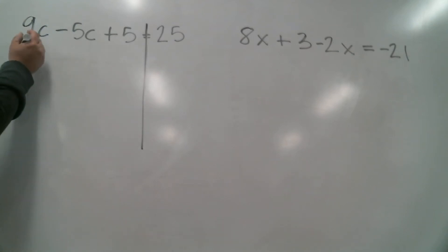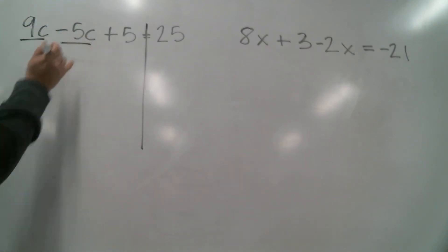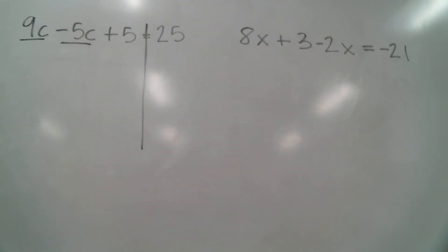Okay, so in this case we have a 9c and we also have a negative 5c. One of the things that sometimes confuses kids is you have to remember the sign that's directly in front of the number is the sign that belongs to that number. So this here with no sign is a positive 9c. This is a negative 5c. So we're gonna have to combine those, 9c and negative 5c. Remember combining is like adding them together. So you have 9c plus negative 5c which is basically 9 minus 5. So you have 4c.